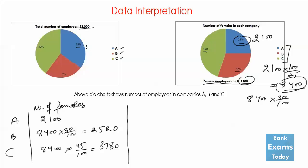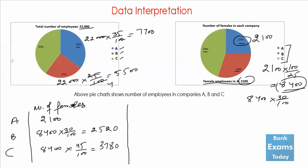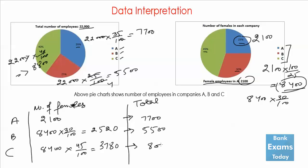The total number of employees is 22,000. In company A it is 35% of 22,000, which becomes 7700. In company C it is 40% of 22,000, which becomes 8800. So the total number of employees: company A is 7700, company B is 5500, and company C is 8800.